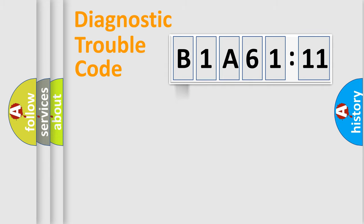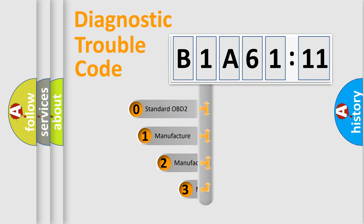Powertrain, body, chassis, and network. This distribution is defined in the first character code.